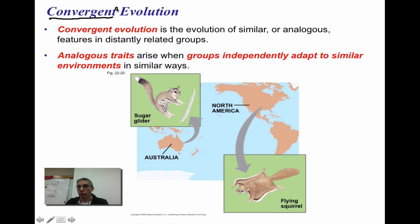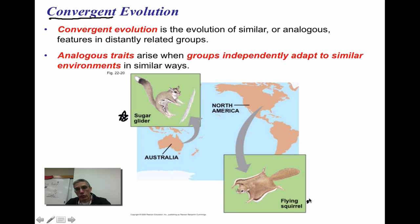Sometimes we categorize evolution into specific forms. Convergent evolution is the evolution of similar or analogous features in very distantly related groups. These analogous traits arise when groups are geographically independent from each other but live in environments that are very similar. The example here is a sugar glider and a flying squirrel. Both have gained the ability to glide, largely based on the environment they live in. Their environments are separated by a great distance, but the similarity in environment is the key — environment is going to dictate the way an organism evolves over a long period of time.